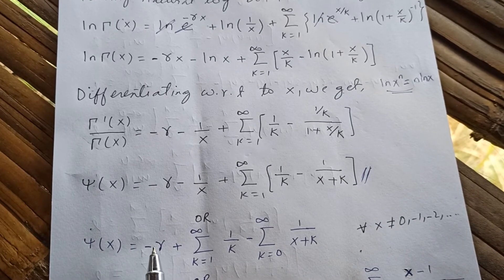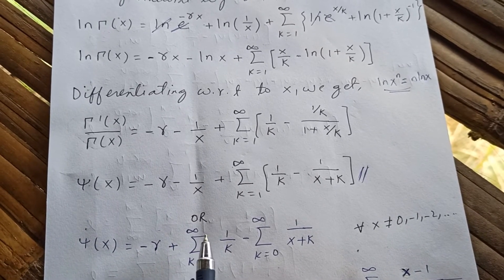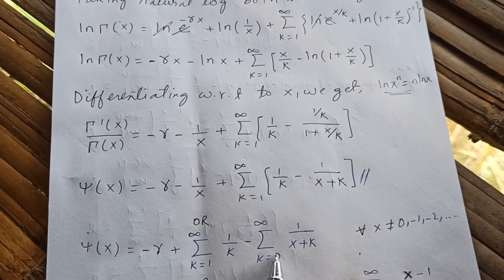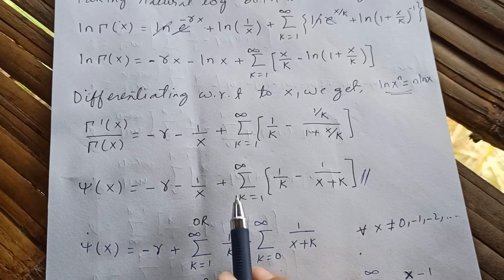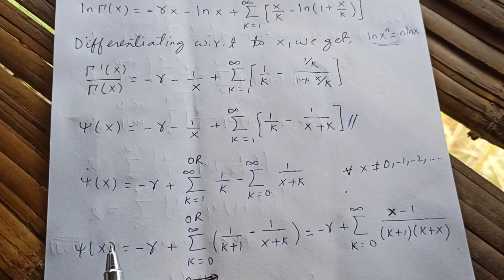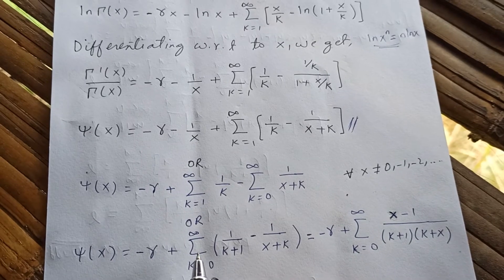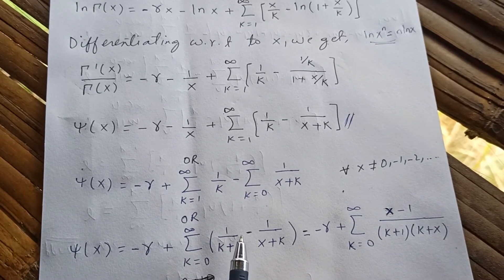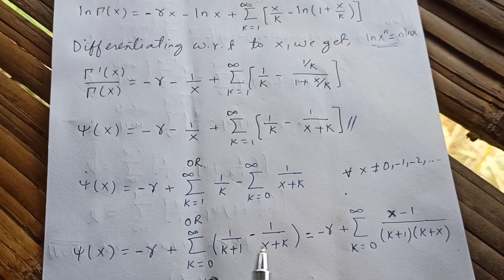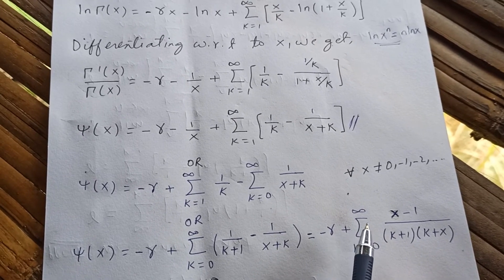You can simplify this further: digamma of x equals negative Euler-Mascheroni constant plus the sum from k equals one to infinity of one over k, minus the sum from k equals one to infinity of one over x plus k. Since these two sums are the same at k equal to zero you get negative one over x. Or equivalently, digamma of x equals negative Euler-Mascheroni constant plus the sum from k equals zero to infinity of one over k plus one minus one over x plus k.